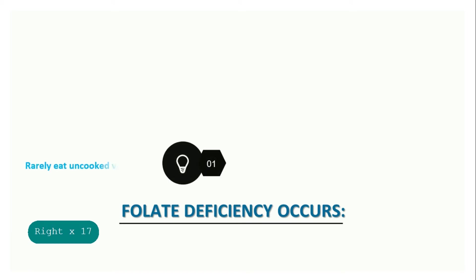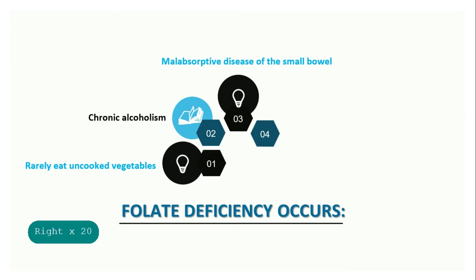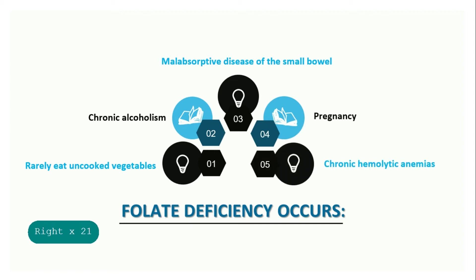Folate deficiency occurs in people who rarely eat vegetables. Another one is chronic alcoholism. Alcohol increases folic acid requirements, and at the same time, patients with alcoholism usually have a diet that is deficient in the vitamin. Some patients with malabsorptive disease of the small bowel, such as celiac disease, may not absorb folic acid normally. Folic acid requirements are also increased in patients with chronic hemolytic anemias and in women who are pregnant, because the need for erythrocyte production is increased.